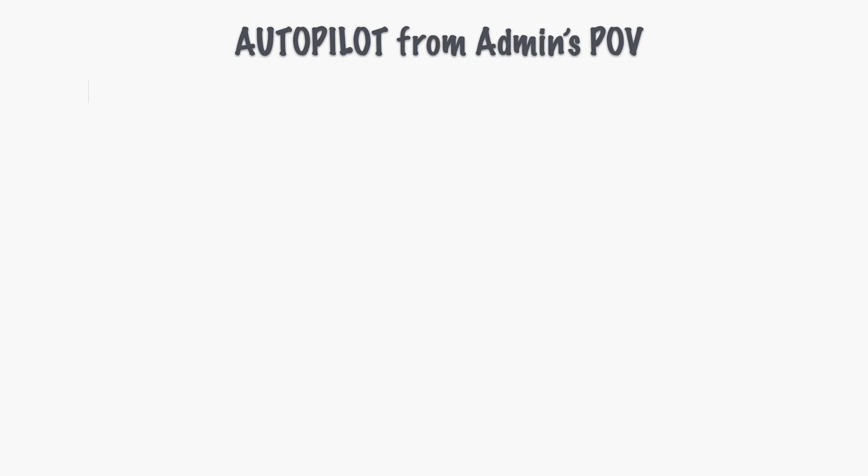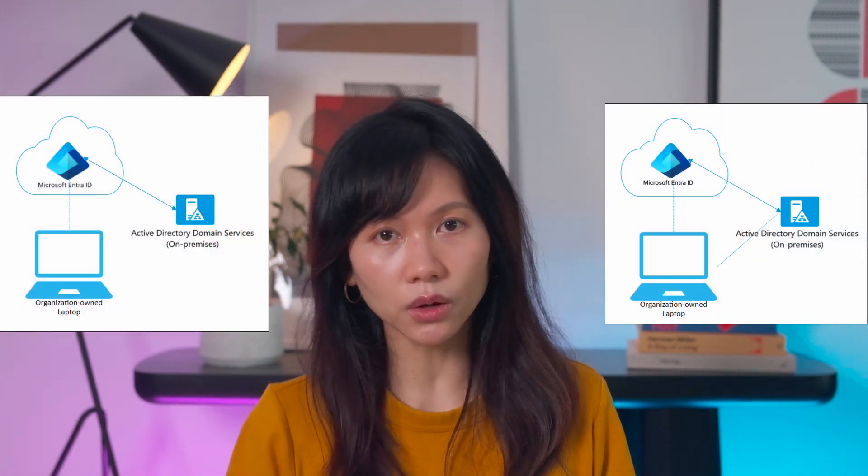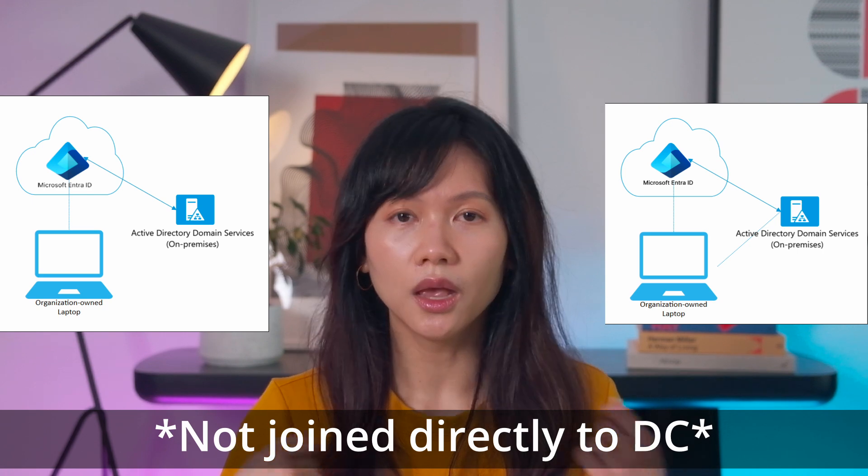As an admin, you first need to determine if your environment is going to be a hybrid — so cloud with an on-premises domain — or Entra-joined, which is cloud only with no domain controller. So which is it going to be for your Autopilot computers? If you plan to eventually go fully cloud, you can have your Autopilot devices be on Entra Join while the existing computers stay in their current hybrid situation and slowly change them out when they are due for replacement or migration. It's worth noting that a hybrid-joined environment requires more configs.